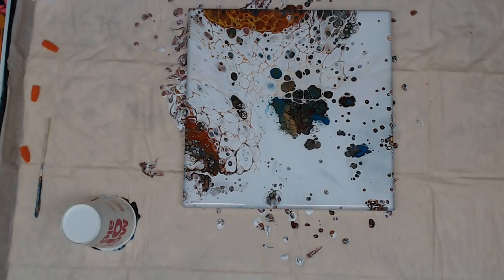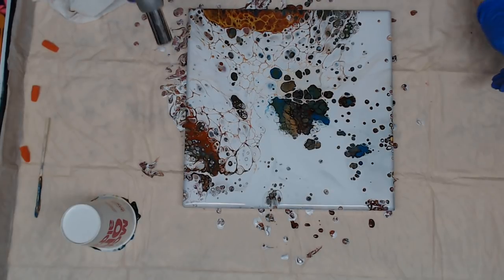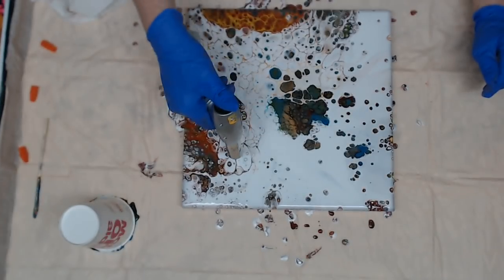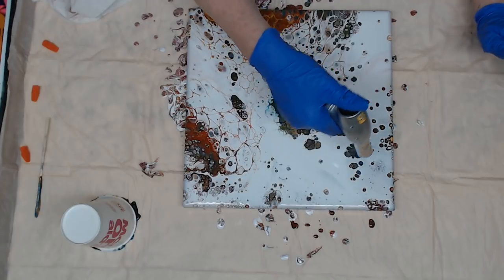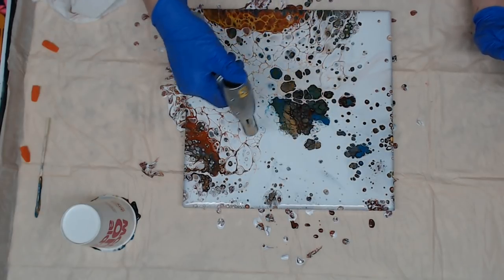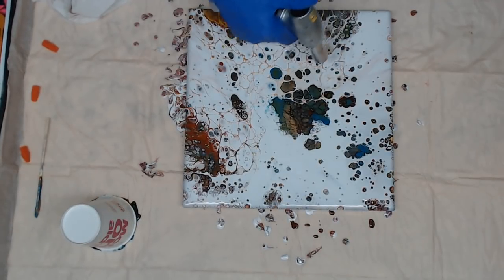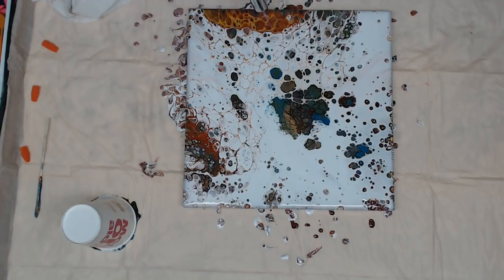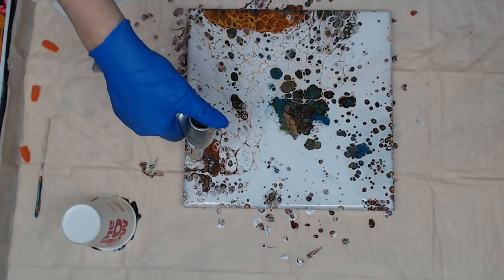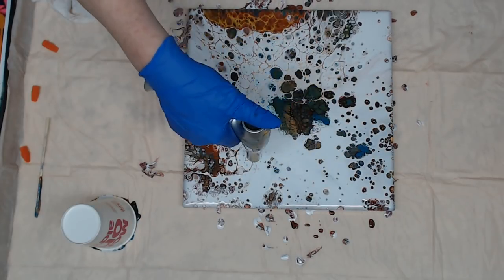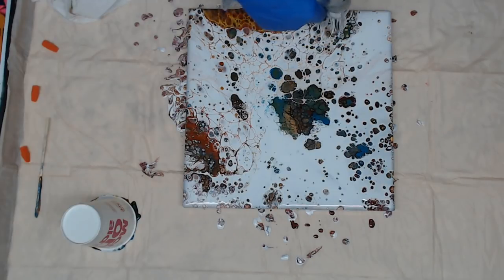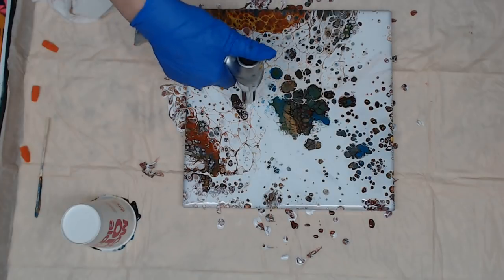So I'm going to heat this up now, and then I'm going to let it set for five minutes and we'll see what happens. I get the majority of the paint off my hands before I grab my torch. Lots of tiny cells coming up where the white is thinned out over that flip cup.